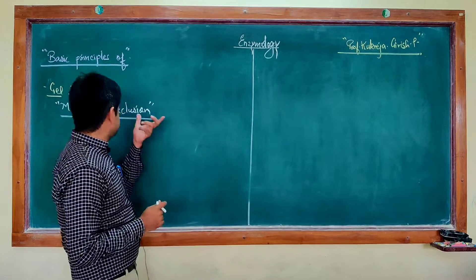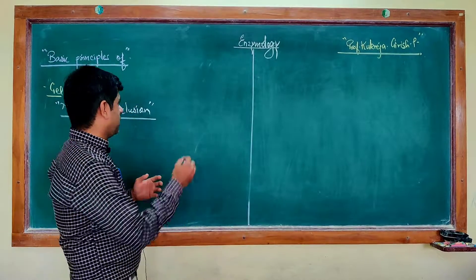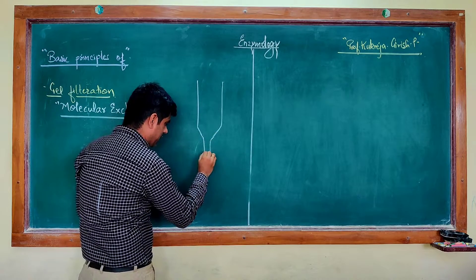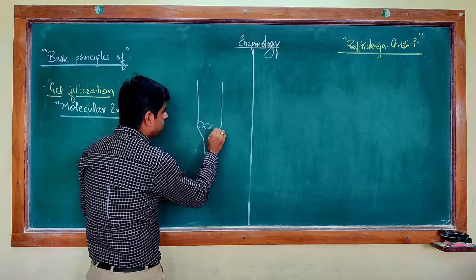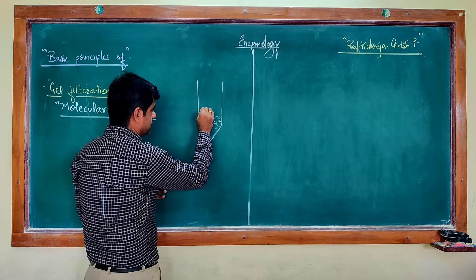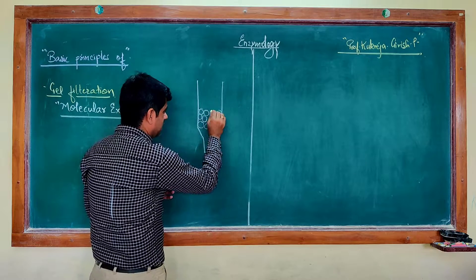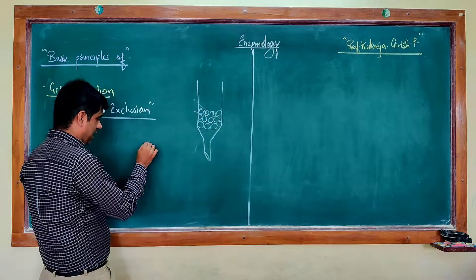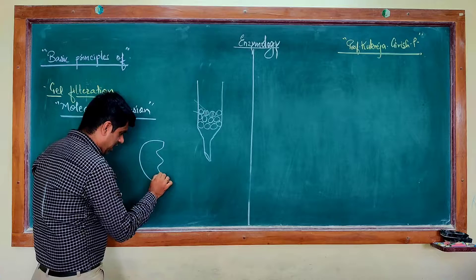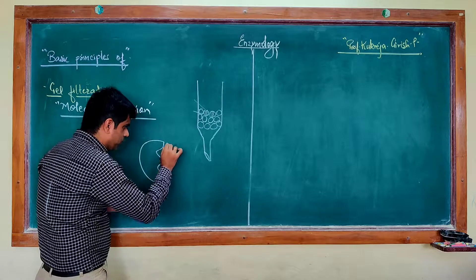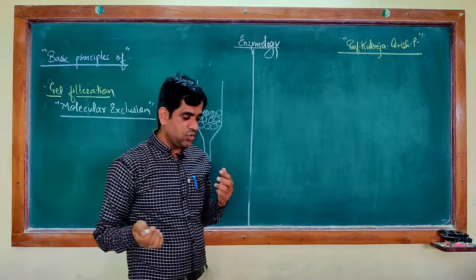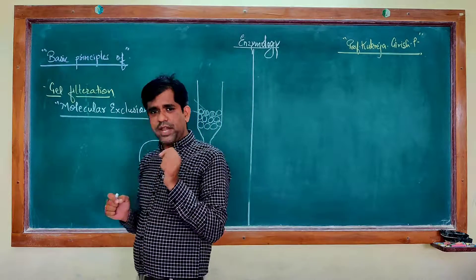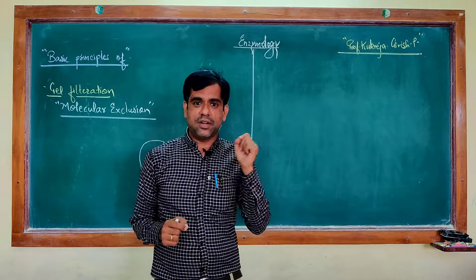So what exactly is done in this gel filtration or molecular exclusion chromatography? You have a column which is packed with porous beads. This entire column is packed with these porous beads. These beads are porous — to have an enlarged view, one particular bead will have a pore. You can use Bio-Rad gels, you can use Sepharose, you can use agarose beads which are porous. These porous beads have pores of a particular predetermined size.